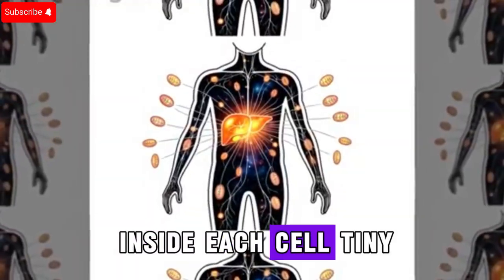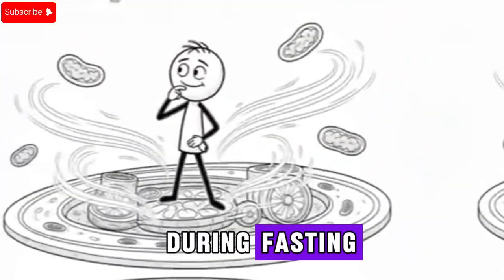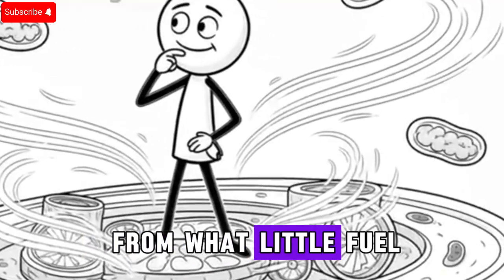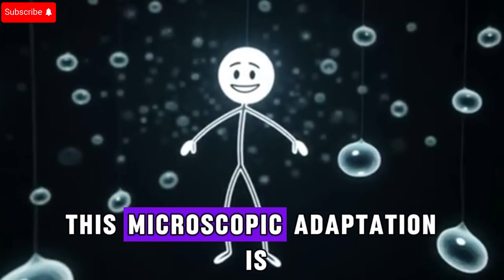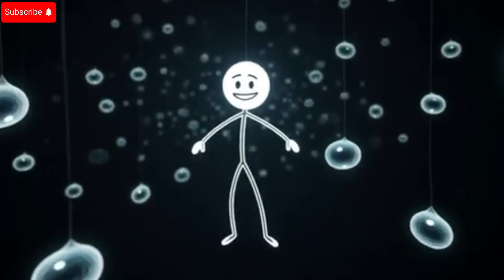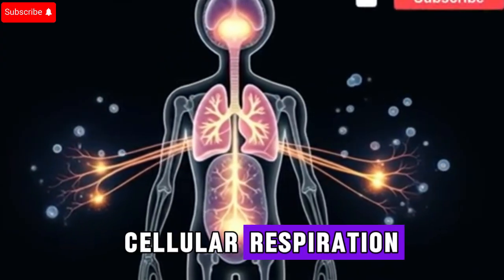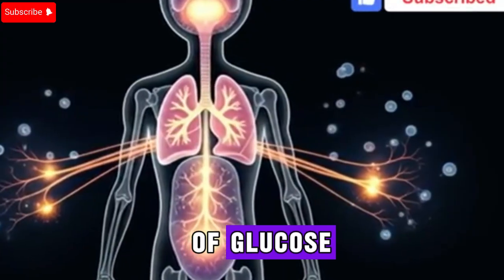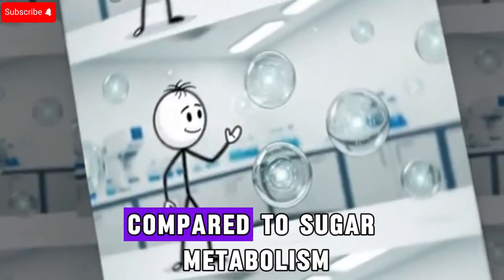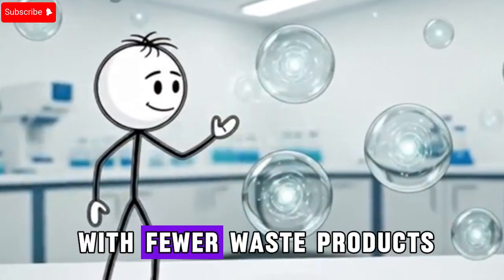Inside each cell, tiny structures called mitochondria act like power plants. During fasting, they are forced to become more efficient, squeezing every drop of energy from what little fuel is left. Cells begin to adjust their breathing, a process known as cellular respiration. Without a constant flood of glucose, they switch to burning fat-derived molecules, which creates less oxidative stress. This means your cells are essentially working cleaner, with fewer waste products.